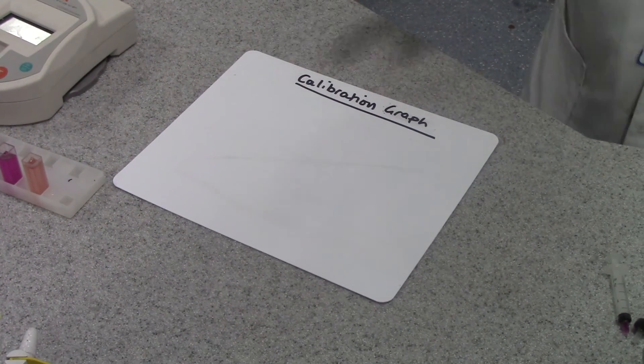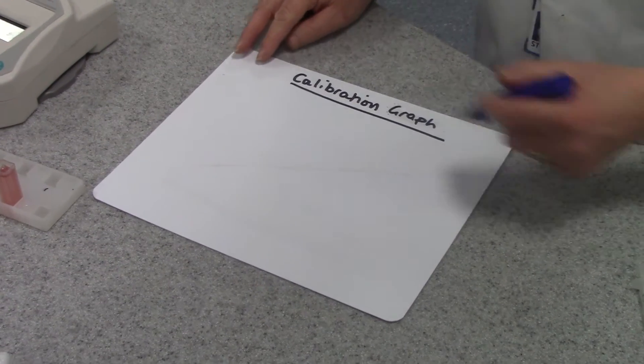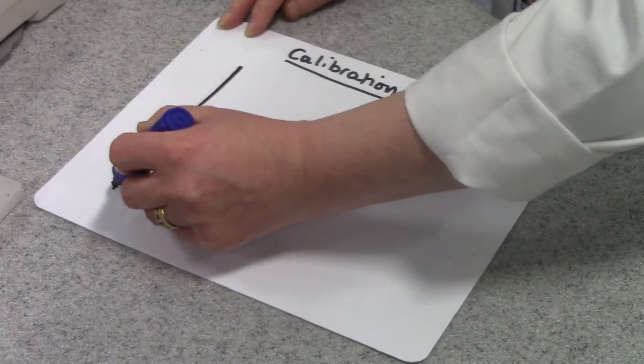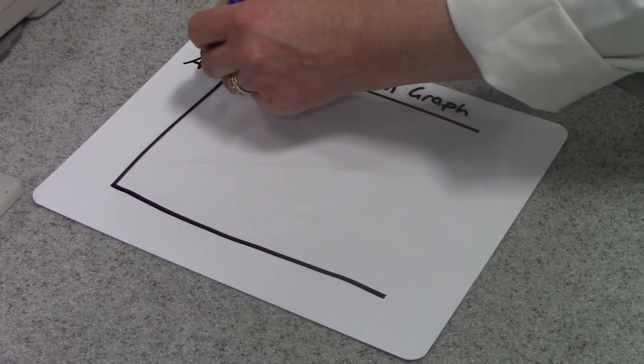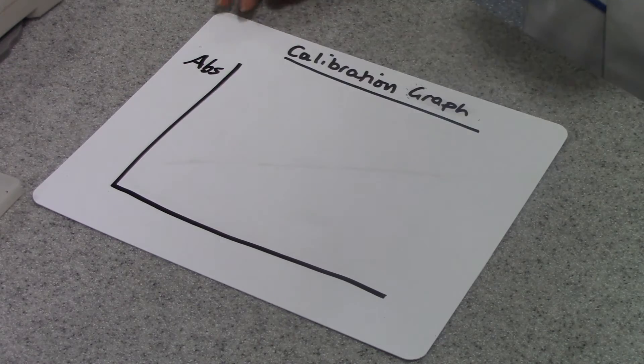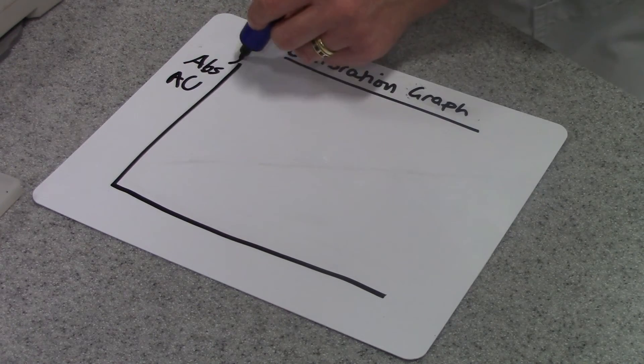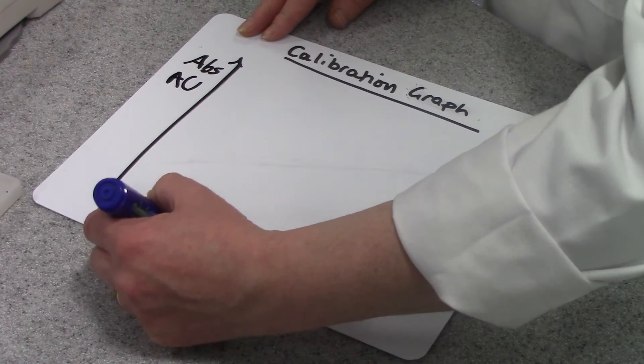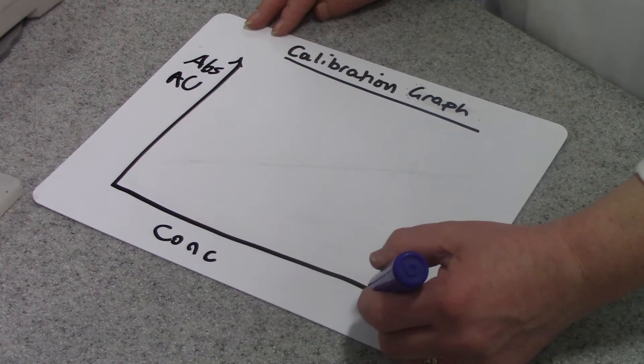What I will have is data that I can use to plot a calibration graph. And this is a graph like this where I've got my absorbance of light, usually in arbitrary units on the y-axis, and my concentration of my solution on the x-axis.